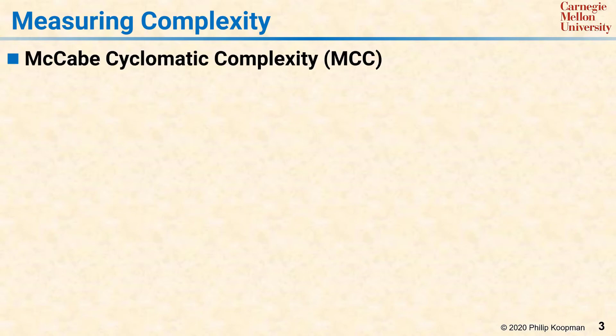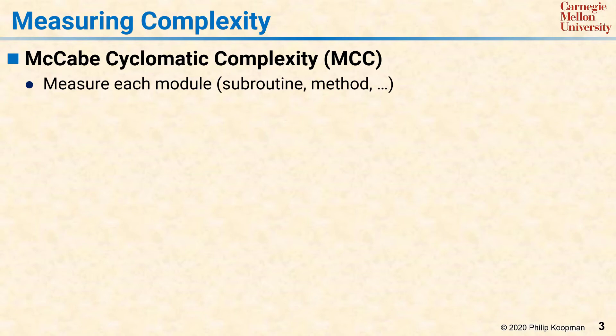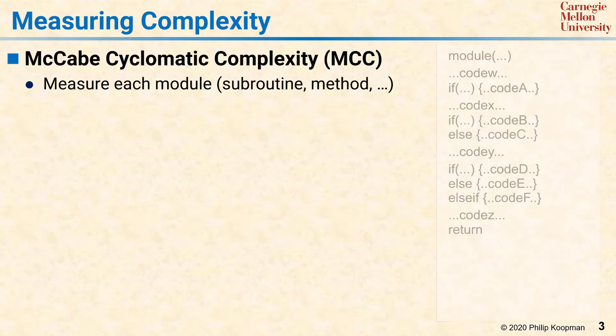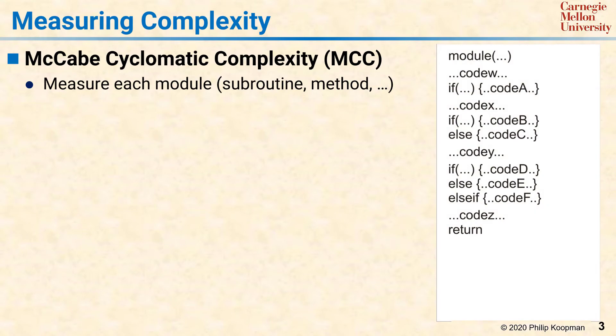If we want a consistent way of reducing complexity, it's really helpful to have a way to measure it. McCabe Cyclomatic Complexity, abbreviated MCC, is a well-known way to measure the complexity of software and determine whether that software is spaghetti code. You can measure MCC by considering a single module — whether that be a subroutine, a method, or some other chunk of code that you can unit test. While in practice MCC can be computed by a tool, it's helpful to see how it can be done by hand as an illustration of the principle.